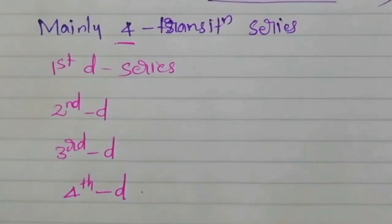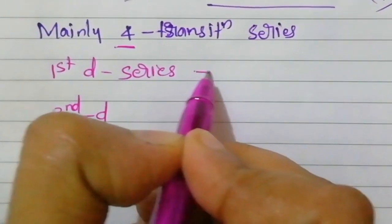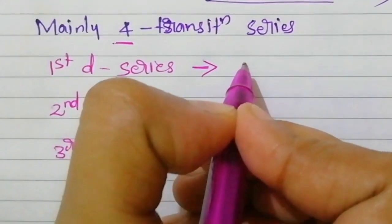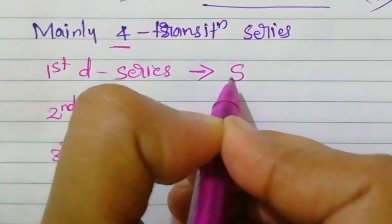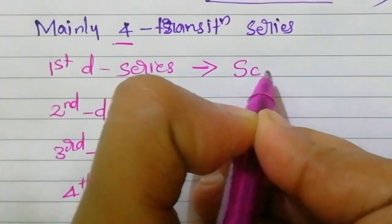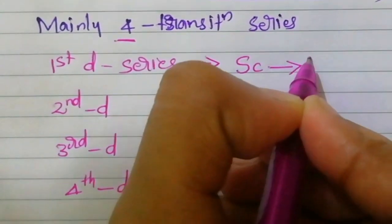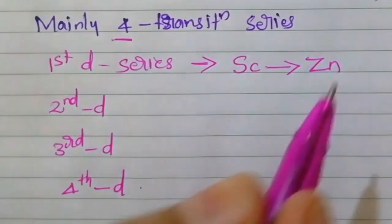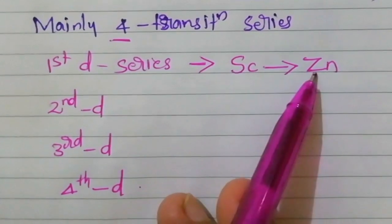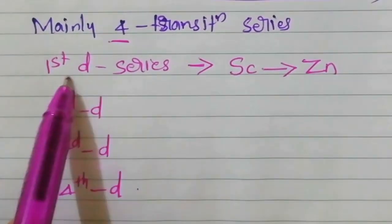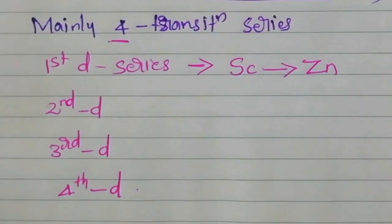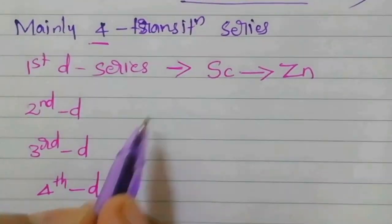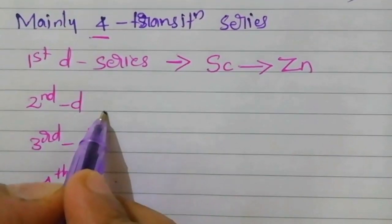The first D series — its first element is scandium. The first D series consists of 10 elements from scandium to zinc. This is something we have already studied in the previous class, including the electronic configurations. First D series: scandium to zinc.